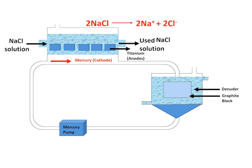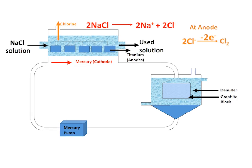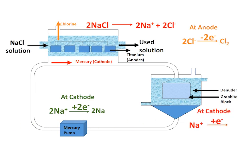Cations move towards cathode and anions towards anode. Chloride ions are oxidized at the anode and chlorine gas is liberated from the top. Sodium positive ions move towards the cathode which is flowing mercury.